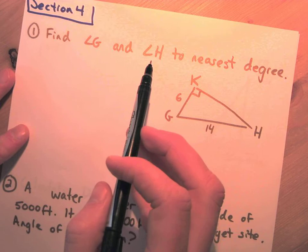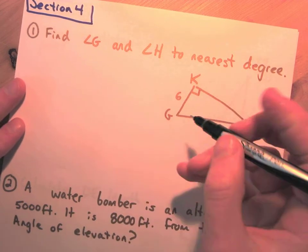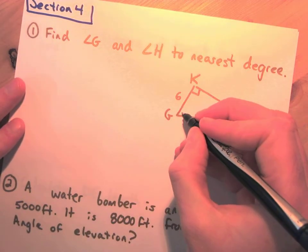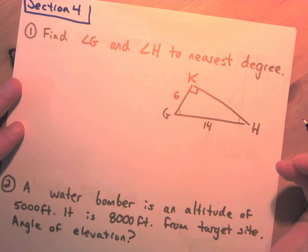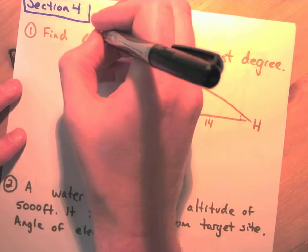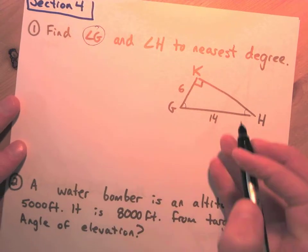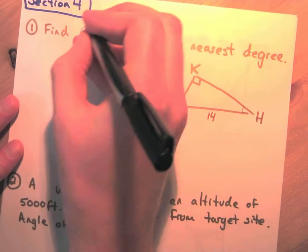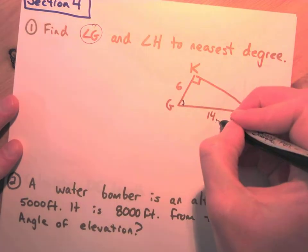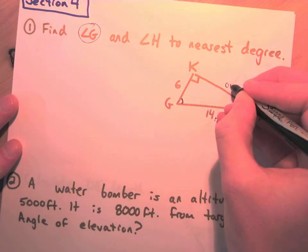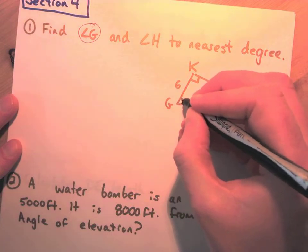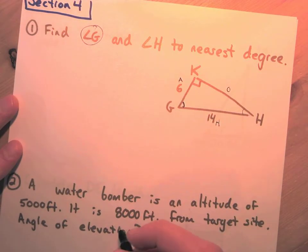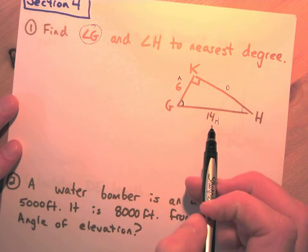We want to find angle G and angle H to the nearest degree. Just like before in section two, we look at them one at a time. For angle G, let's label the triangle in relation to just that one angle: H is straight across, O is straight across from the one you're trying to find, and A is right beside.